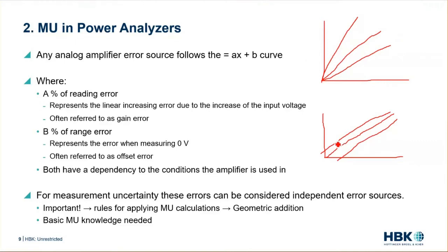For measurement uncertainty, these errors can be considered as independent error sources. That's something important to consider as we now can apply the rules for measurement uncertainty calculations. Those are statistical rules, and we can apply geometric addition as they can compensate for each other.